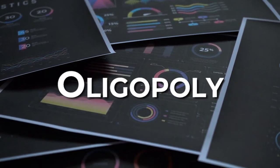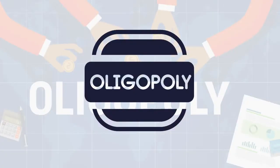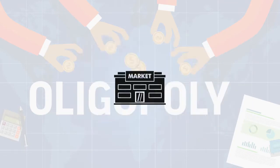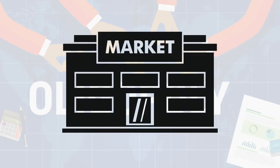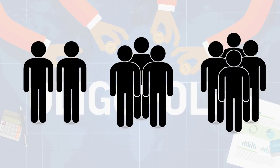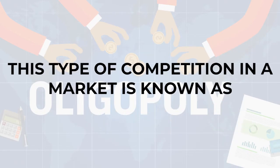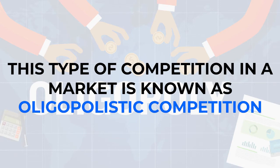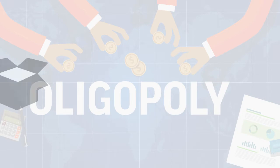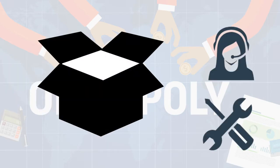What is an Oligopoly? Oligopoly is a term used to define an industry, a specific market, or a company. It is a market dominated by a few players and can have many small players. This type of competition in the market is known as oligopolistic competition. A few enterprises dominate the market, often selling similar goods and services.